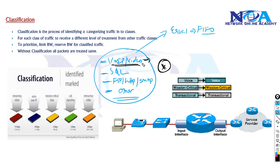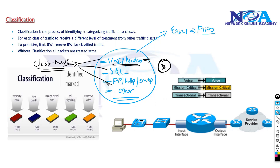The first step is to identify the traffic and categorize it into different classes. In terms of configuration, we will be using class maps — we need to create separate class maps to match those separate traffic types. We'll see the configuration a little bit later.